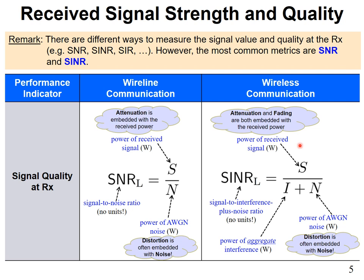Sometimes on an exam for a wireless communication problem, we'll ask you to find SNR — because we're relaxing the situation and assuming no interference, such as operating in an isolated area. That's done to be nice to students and simplify the calculation. But in scientific papers, SINR is what you'll typically see for wireless communications.